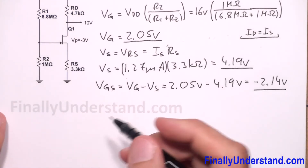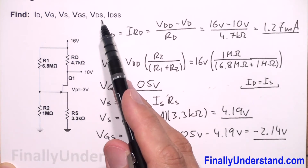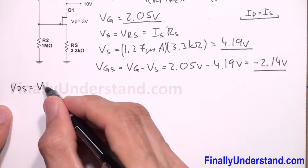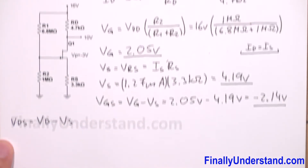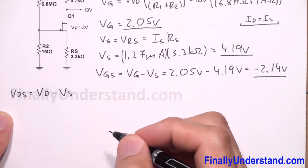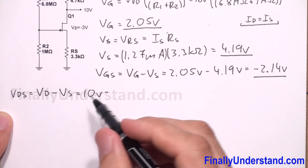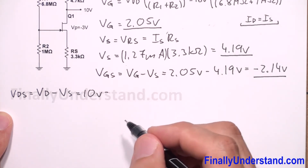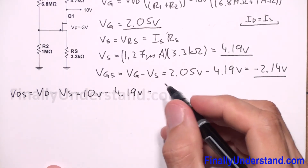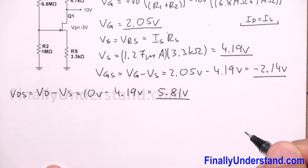We also have VD and VS, so we can find VDS. VDS = VD - VS = 10 volts - 4.19 volts = 5.81 volts.